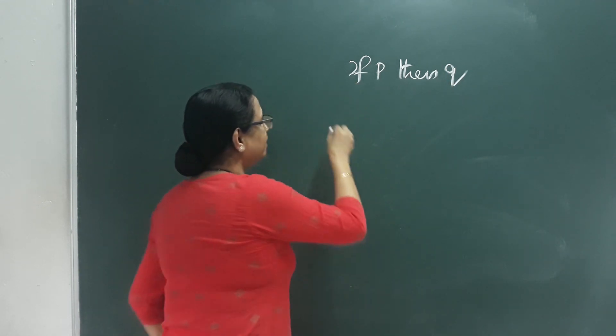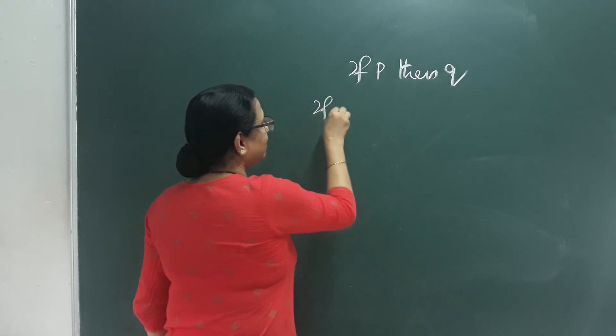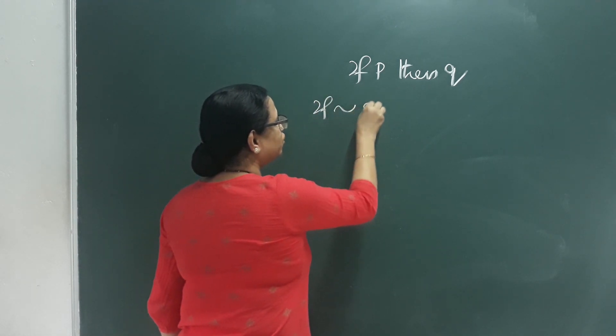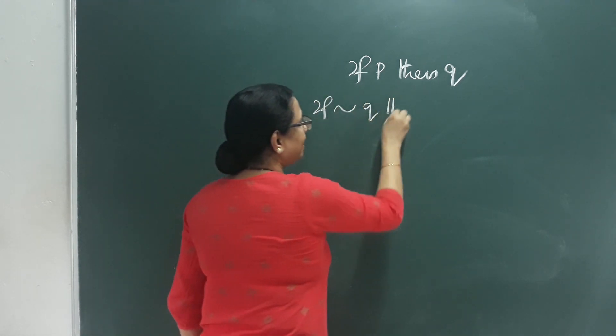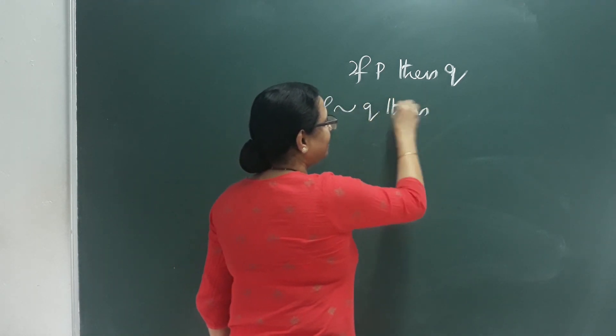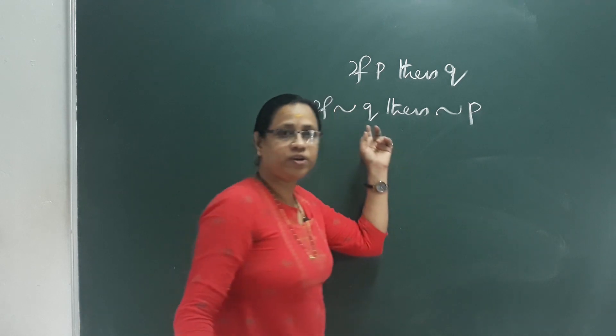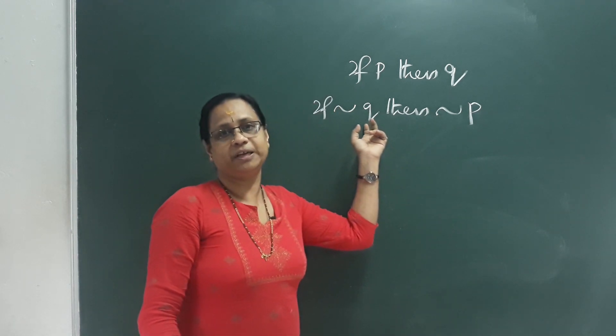We apply Negation first: if Negation Q, then Negation P. This is why we call it the Contrapositive.